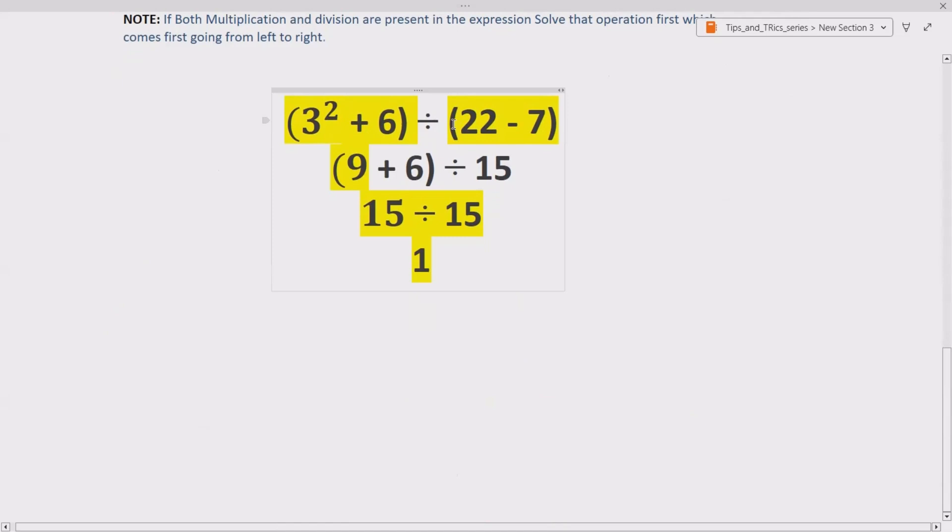First, 22 minus 7 gives us 15. 3 squared gives us 9 plus 6. Now 9 plus 6 gives us 15, and we have 15. Now we do division because we solved the brackets.